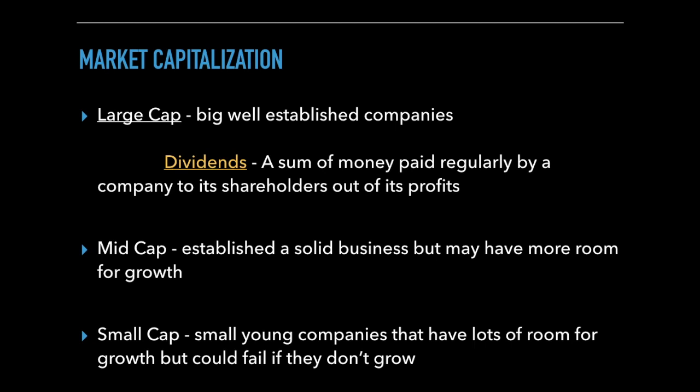Mid-cap companies are kind of in the middle of their business cycle. They've established a solid business, but they may not be at their peak yet. So these types of companies have more potential for growth, but also carry a little more risk compared to a large cap company because they don't have as many resources to defend them if the company is in trouble. Small cap companies are going to be young companies which may have a lot of competition, limited resources, and many uncertainties when it comes to business growth or surviving an economic downturn, making them very high risk. But since these companies are small and in the early stages of their business cycle, they have a lot of room to grow if business goes well.